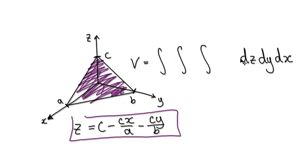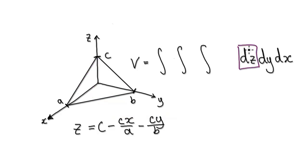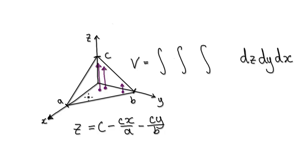Picture that plane. If you decide to use dz first, then you've got to move all parallel to the z axis. So if you shoot straight up to the plane, you start at z equals zero, shoot straight up, and then you stop at the plane.